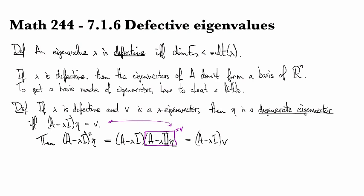But then we also agreed that v was a lambda eigenvector. And that means that this term right here is equal to zero.